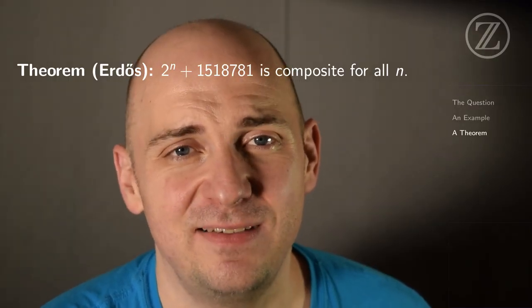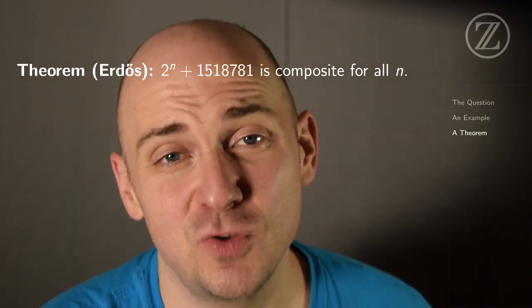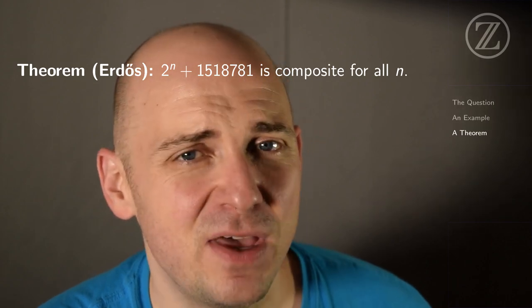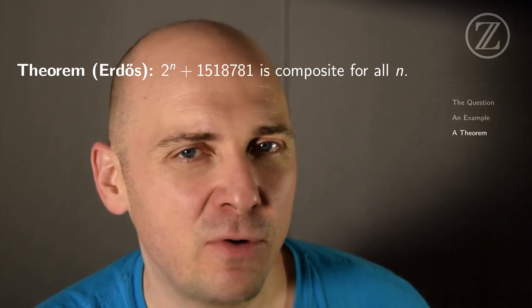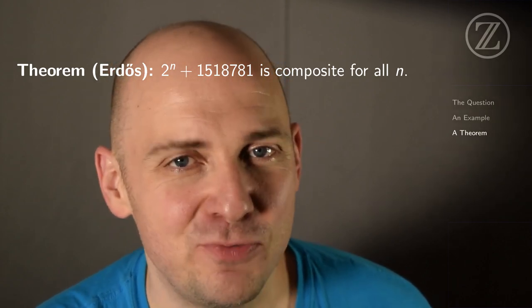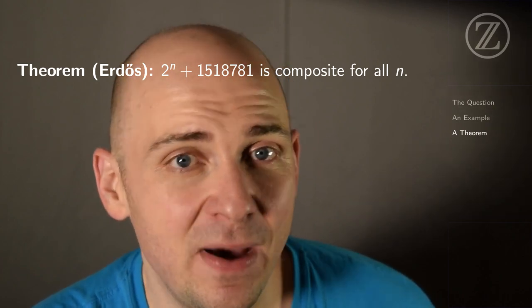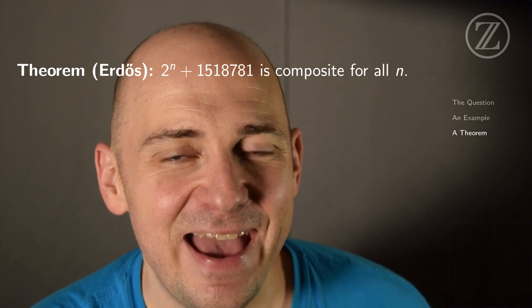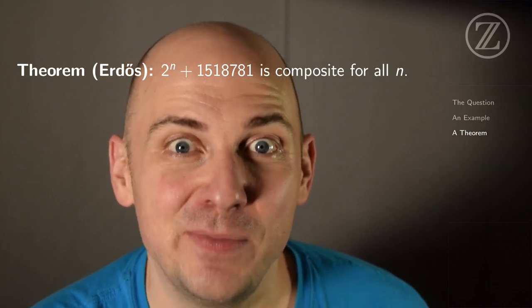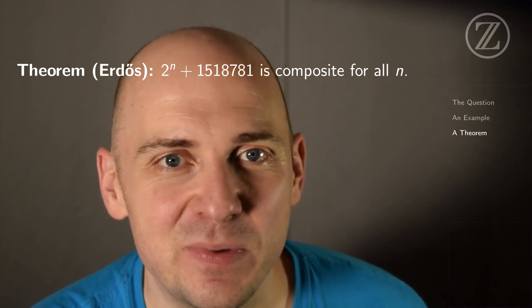This is a really neat result. And I think the method that we use to prove it is also really cool. And it really says something about the prime numbers. You take the powers of 2, which, admittedly, are pretty spread out after a while. But you take those powers of 2 and you shift them by this particular number, and you end up missing all of the prime numbers. I think it's just an amazing picture.